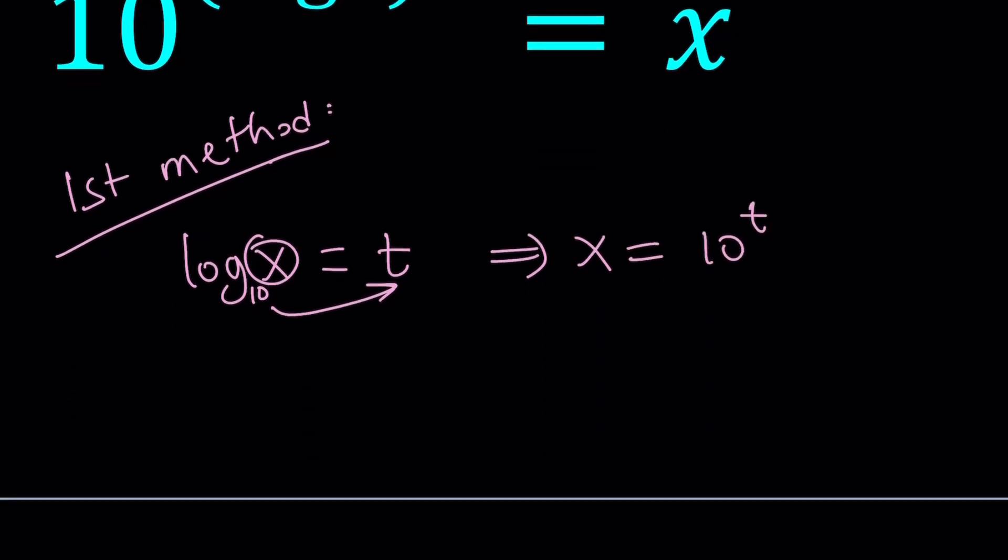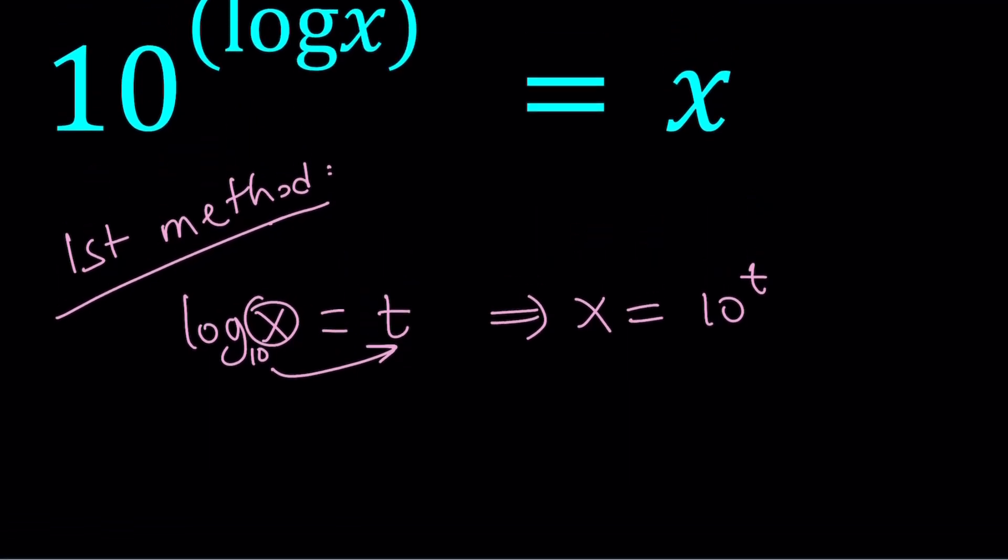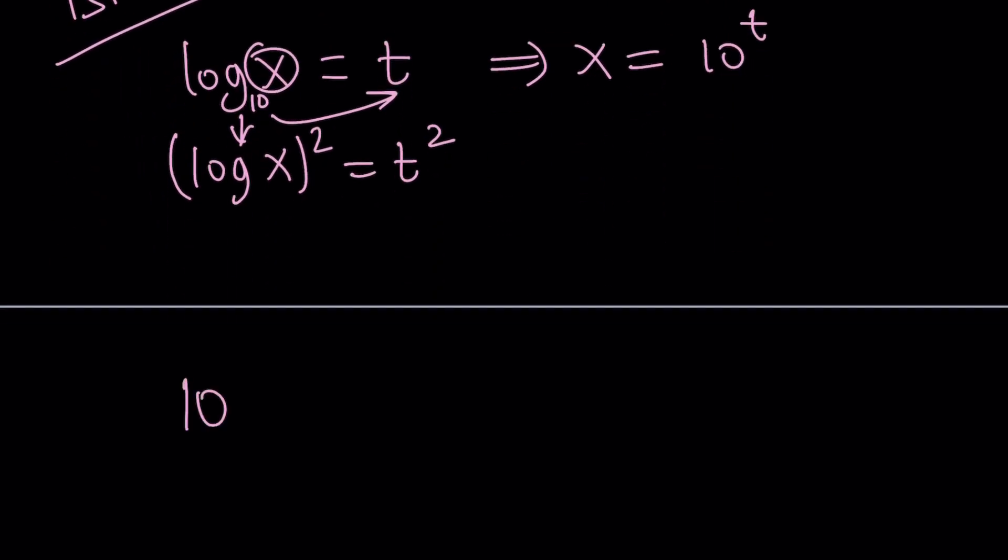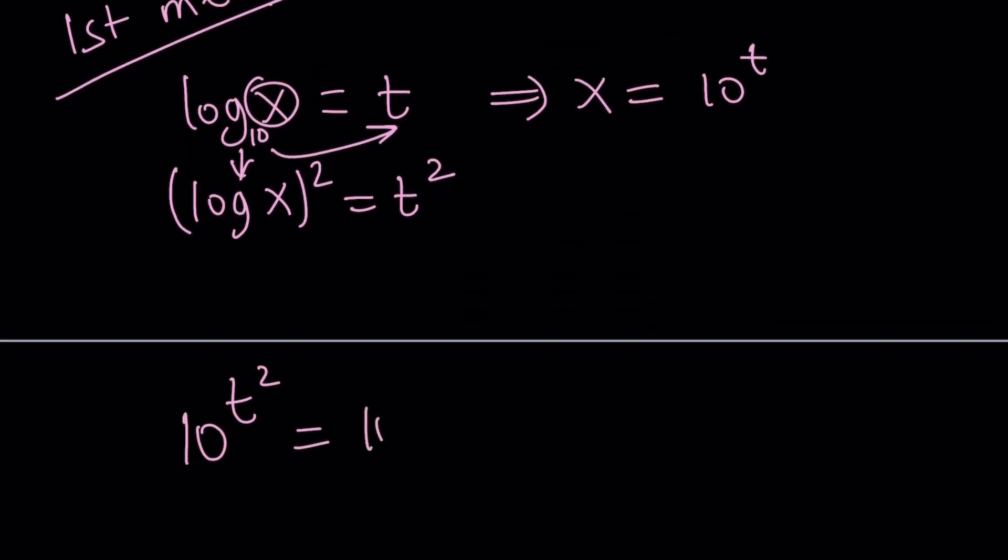Now if x is equal to 10 to the power of t and log x is equal to t, if you square log x, you're going to get t squared. Let's go ahead and substitute. 10 to the power of t squared equals x, which is 10 to the power of t. Wow! Amazing! This turned into an exponential equation. Yes, you should know how to solve this, right? Exponential equations are super important. And you'll find plenty of them on my channel, because that's one of my favorite topics again.